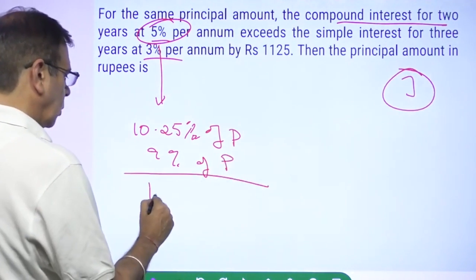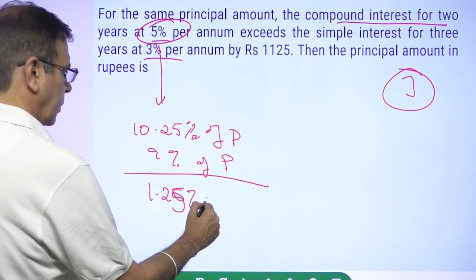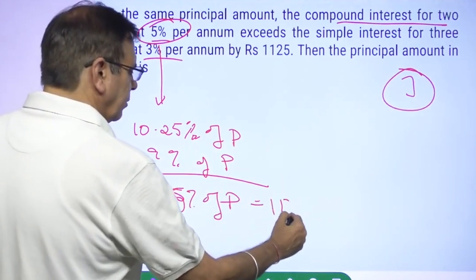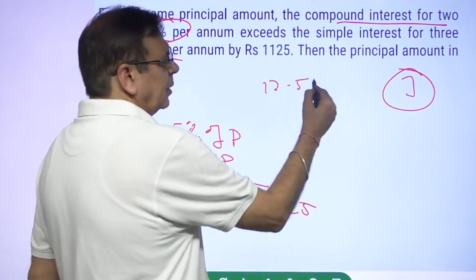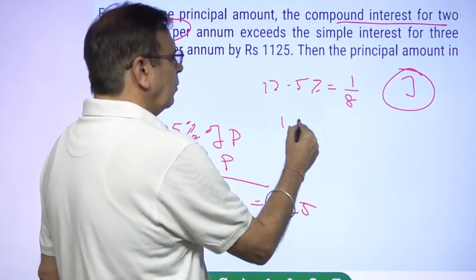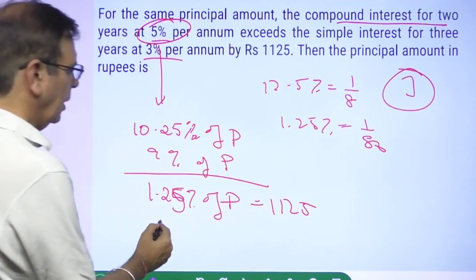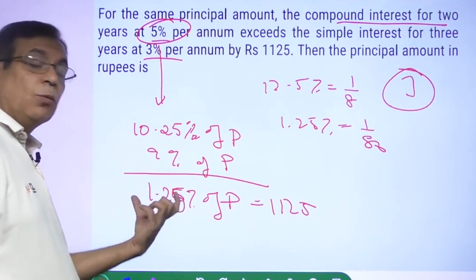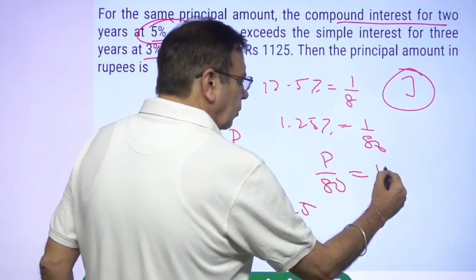What is the difference between the two? 1.25% of principal. What is this equal to? Note that 12.5% is 1/8, so 1.25% should be 1/80. This tells me: principal × 1.25% = principal/80.